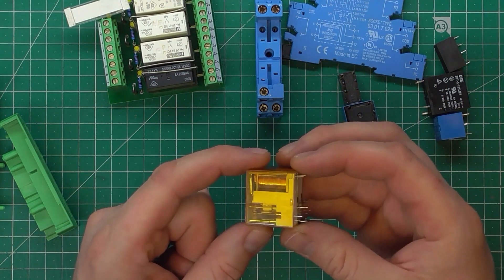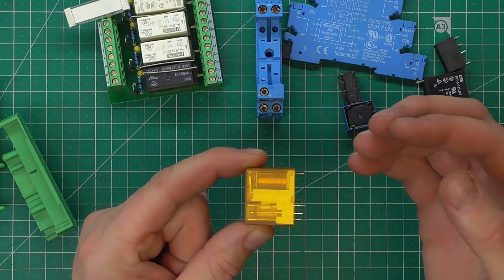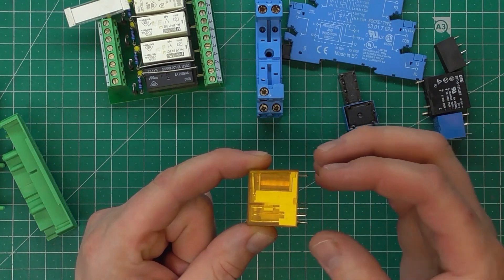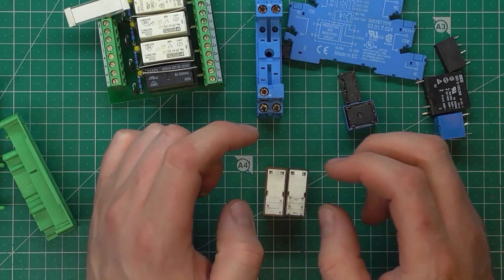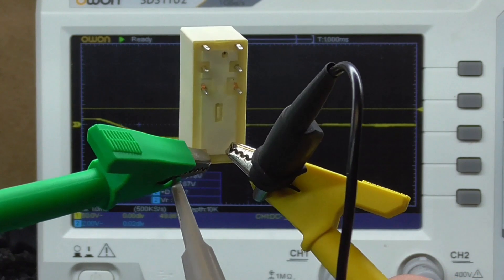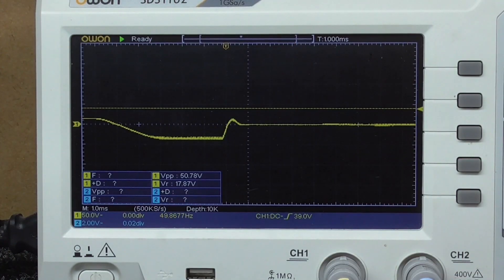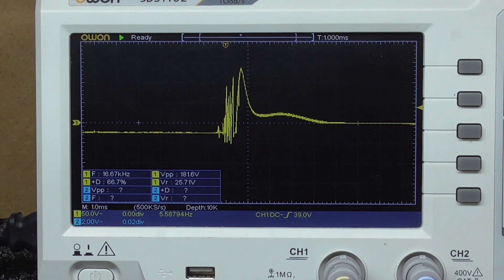Here we have a 24 volts DC coil. Now the coil is on, so the power supply is on. Now I just switched off the power supply, and as we see here there's a huge peak of the voltage. I have 50 volts per decade, so we can see here the peak to peak voltage is almost 180 volts.